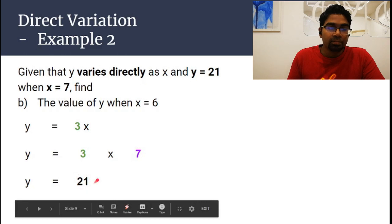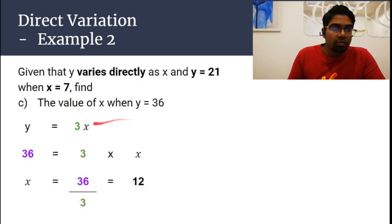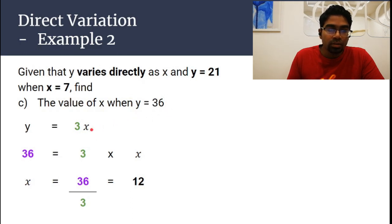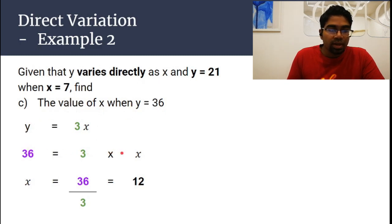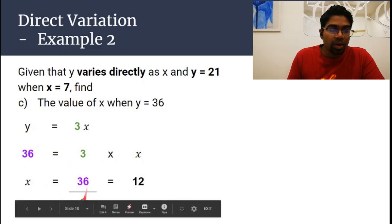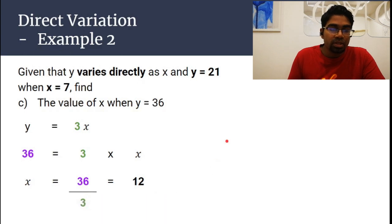So y equals 18. For part c, find the value of x when y is 36. We use the same equation y equals 3x and substitute y equals 36: 36 equals 3 times x. Rearranging gives x equals 36 divided by 3, which is 12.